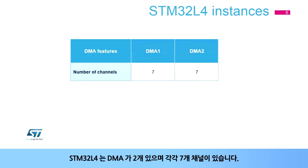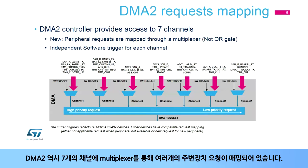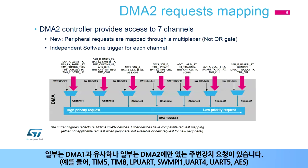STM32L4 implements two instances of the DMA with seven channels each. DMA1 peripheral requests are mapped through a multiplexer for each corresponding channel, with each channel having a fixed group of peripheral requests — the multiplexer allows only one peripheral request per channel. The DMA2 controller also provides access to seven channels with independent multiplexers for each channel. Some peripheral requests are similar to DMA1, but there are unique peripheral requests as well.